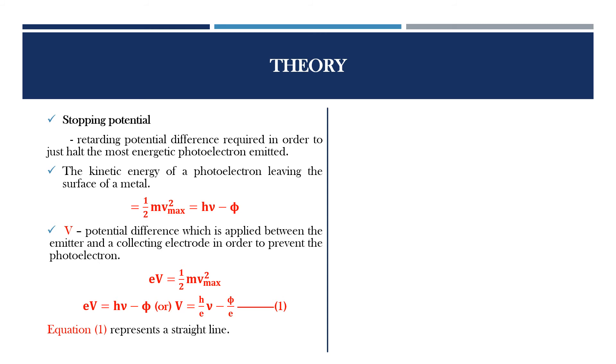Here, h represents the Planck's constant and phi is a constant for a given metal. Equation 1 represents a straight line. Now we can draw the graph between the stopping potential and the frequency. From the graph, we can find out the straight line which is observed between the stopping potential and the frequency.